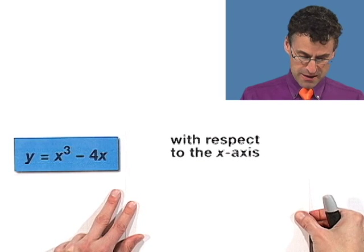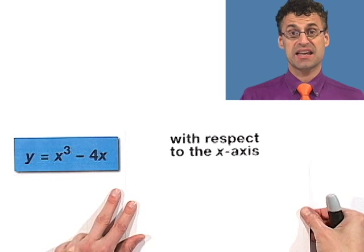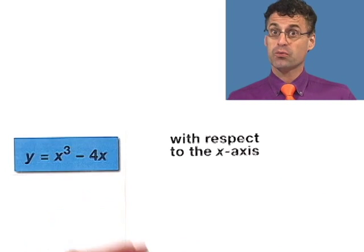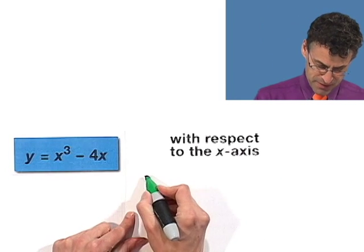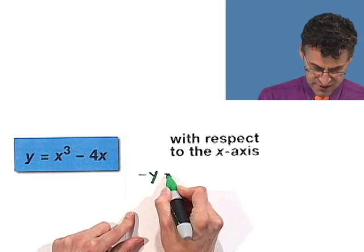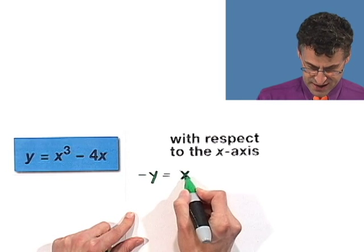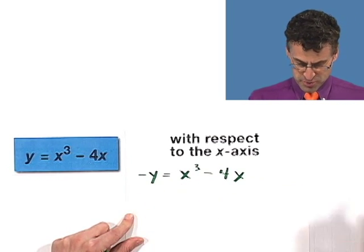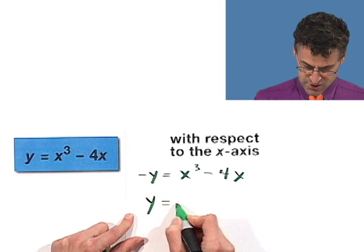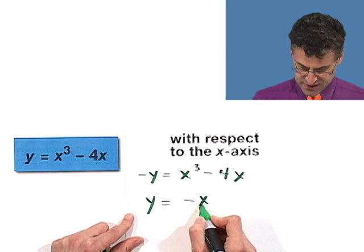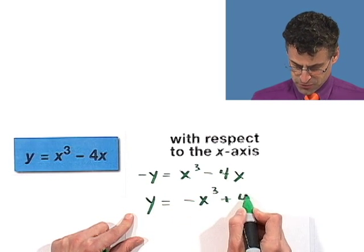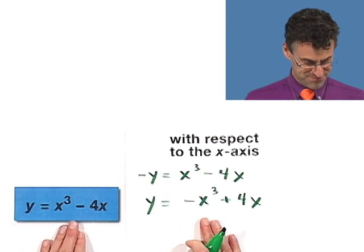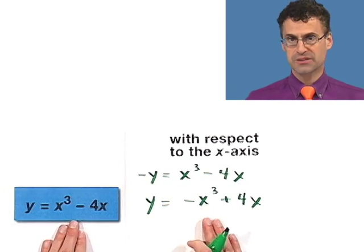What about symmetry with respect to the x-axis? We replace y with negative y and check if we get the same equation. Multiplying through by negative 1, we get y equals negative x cubed plus 4x. That is different from the original equation, so it is not symmetric with respect to the x-axis either.